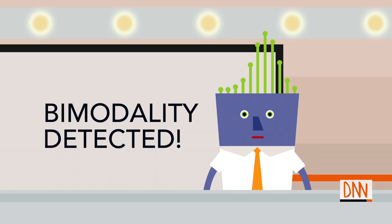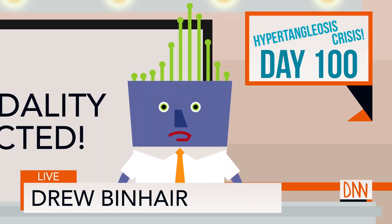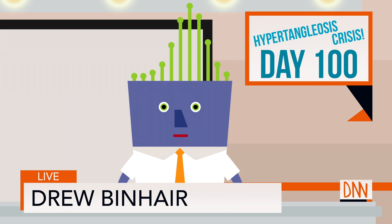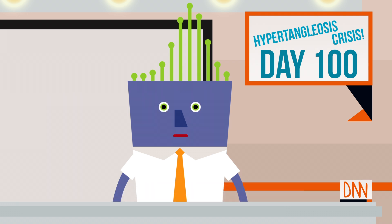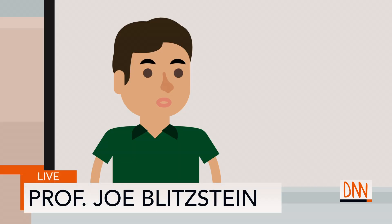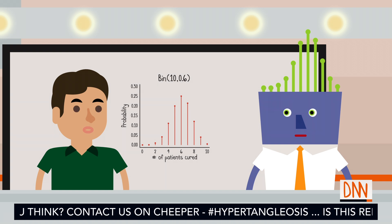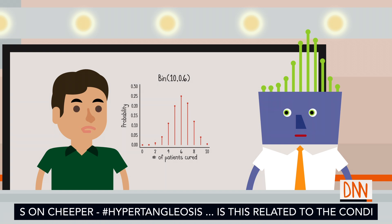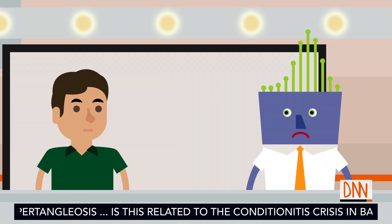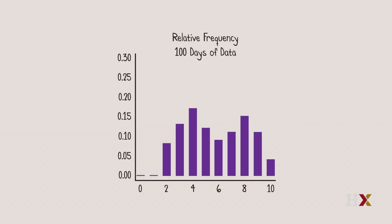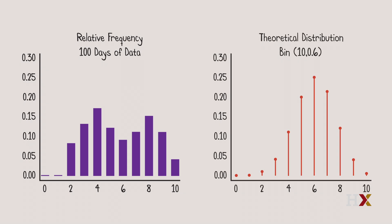Breaking news — this is Jen. Bimodality detected. Day 100 of our continuous coverage of the hypertangulosis crisis has brought us a shocking statistical development. We go to Professor Blitzstein for more. A few months ago, I suggested the binomial distribution as a plausible model for how many patients will get cured on a given day. Now, with much more data, it has become clear that the binomial model is inadequate. Here's a histogram of how many patients were cured in a day, compared with the Binomial(10, 0.6) distribution.